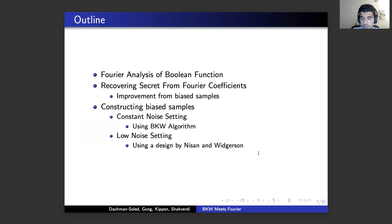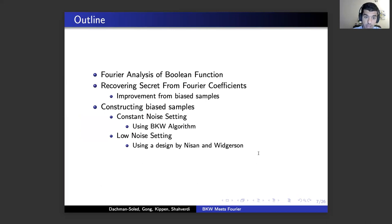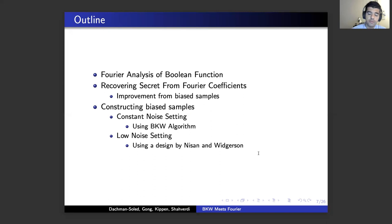Here is the outline of this work. We first look at Fourier analysis of Boolean functions, which is the basic building block of our work. Then we show how we can recover secrets from Fourier coefficients, and show that when samples are biased, we can improve secret-finding. Our focus then shifts toward constructing biased samples — in the constant noise setting we use the BKW algorithm, and for the low noise setting we use a design by Nisan and Wigderson.